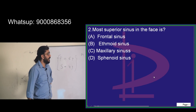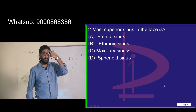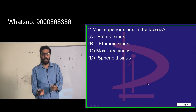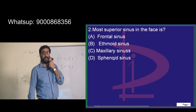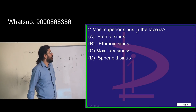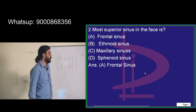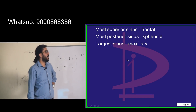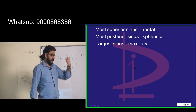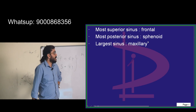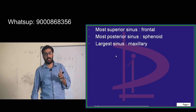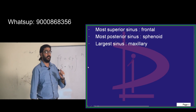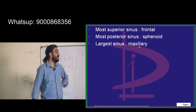The most superior sinus in the face is the frontal sinus. Between the two eyeballs is the ethmoidal sinus, within the center of the skull is the sphenoid sinus, and the maxillary sinus is at cheek level. The most posterior sinus is the sphenoid. The largest sinus is the maxillary sinus, called the antrum of Highmore — 15 ml volume.